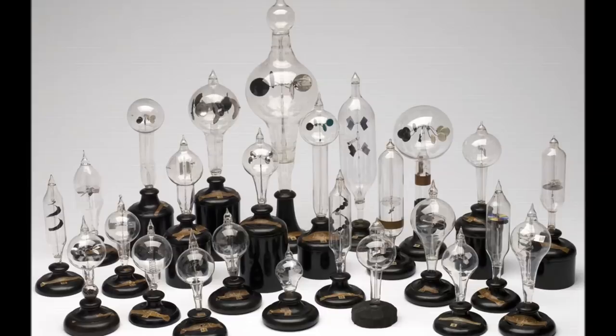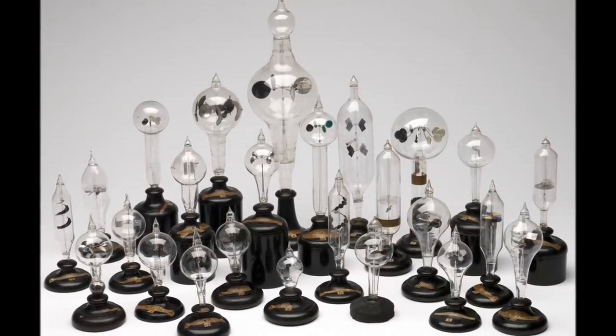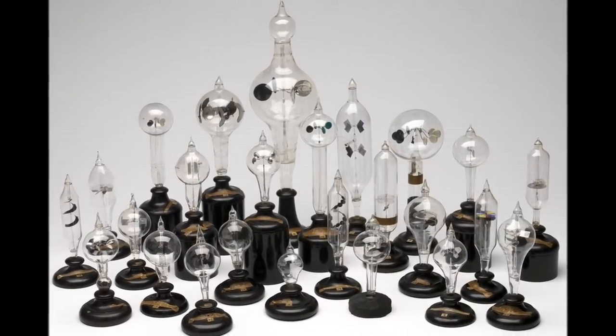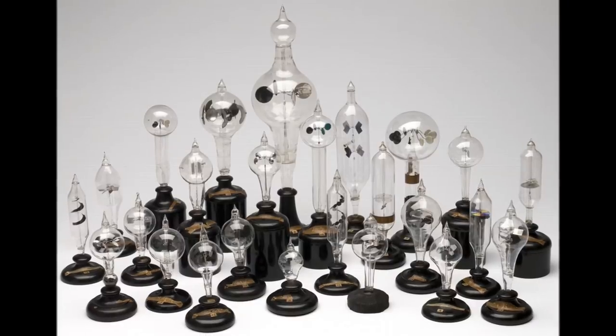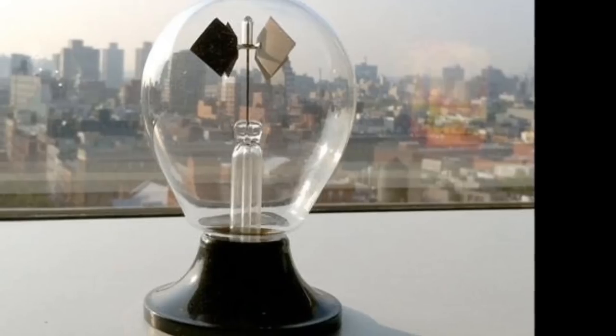In this video I'm going to show you how to move an object, how to move physical matter with a laser beam. It's all going to depend on this light bulb shaped device called a Crookes radiometer.